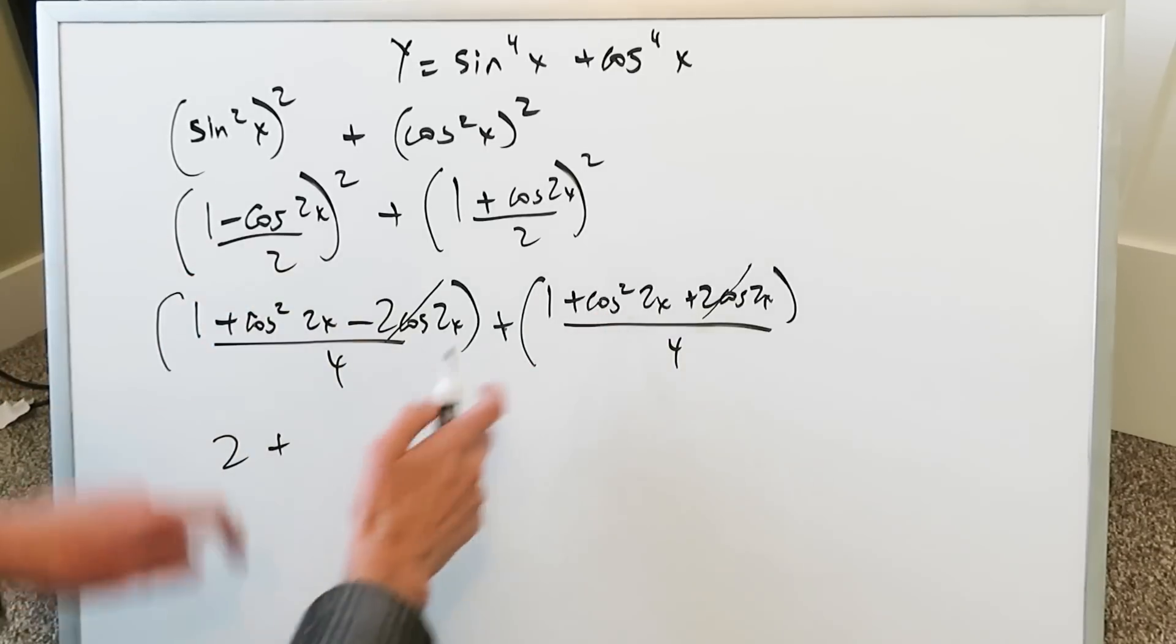Then you'll have a cosine square 2x and a cosine square 2x you can combine that. You'll have a 2 cosine square 2x everything here under a 4 but you can simplify this because everything here is a multiple of a 2.